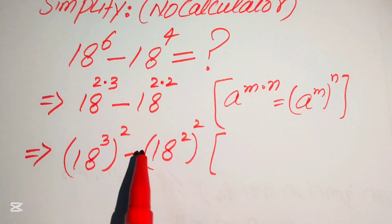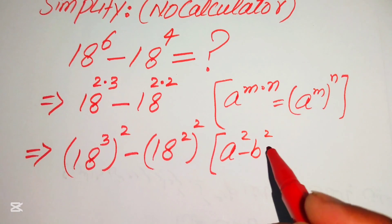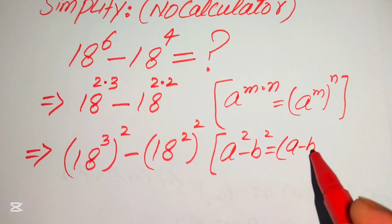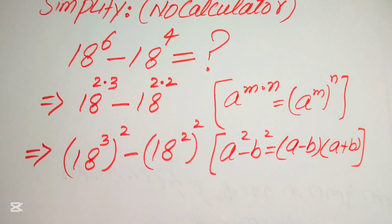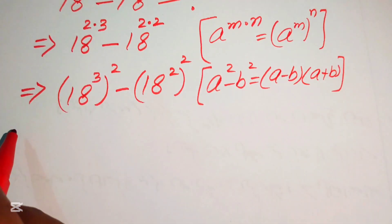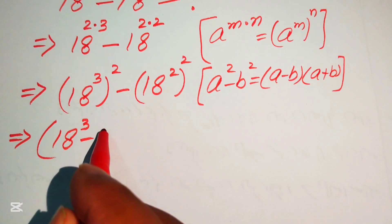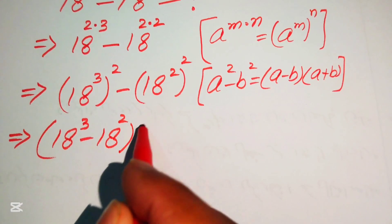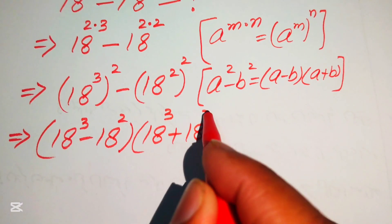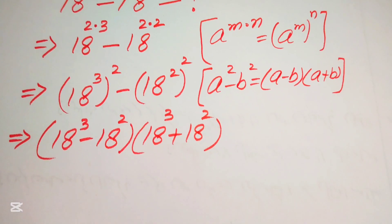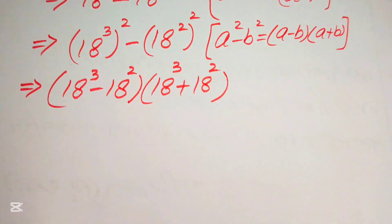Here we apply another algebraic formula: a squared minus b squared equals a minus b times a plus b. According to this formula we write our expression as 18 cubed minus 18 squared, multiplied by 18 cubed plus 18 squared. Our next target is to find the values of 18 cubed and 18 squared.